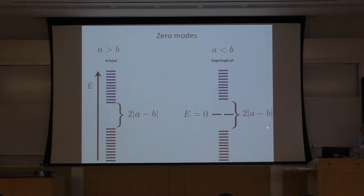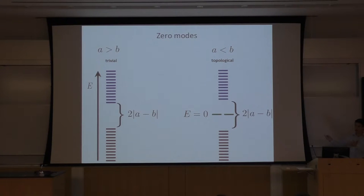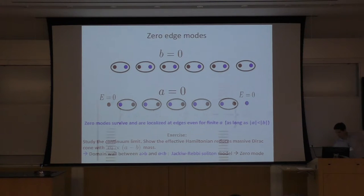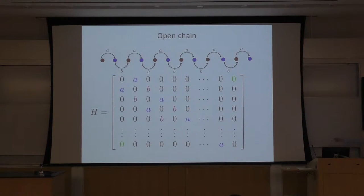How can I understand this zero mode? The simplest way is to go to extreme limits — take B equals zero and A equals zero. For B equals zero, the matrix becomes block diagonal with two-by-two blocks, each of which can be diagonalized easily, giving a negative and a positive energy. I occupy the negative energy, meaning I have dimerization between sites one and two, but no hopping between site two and three.